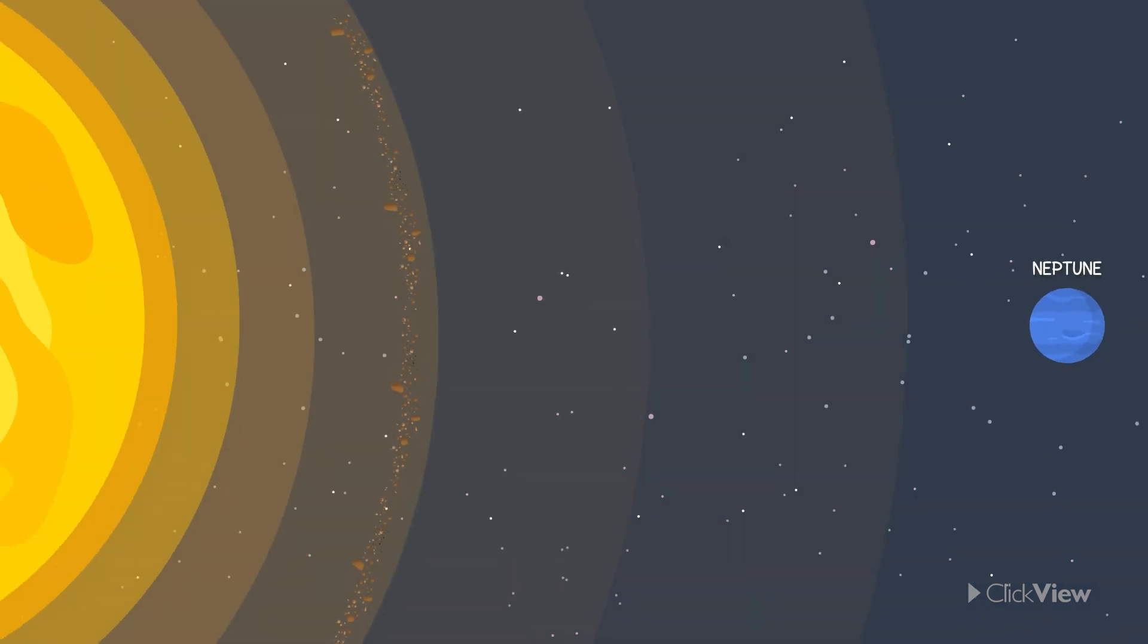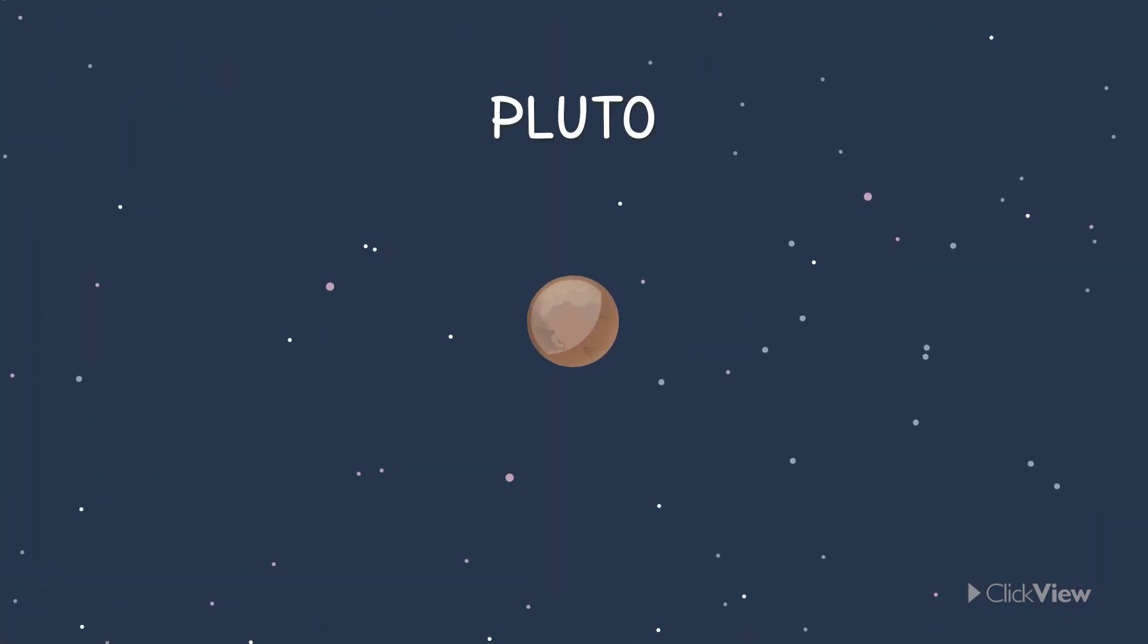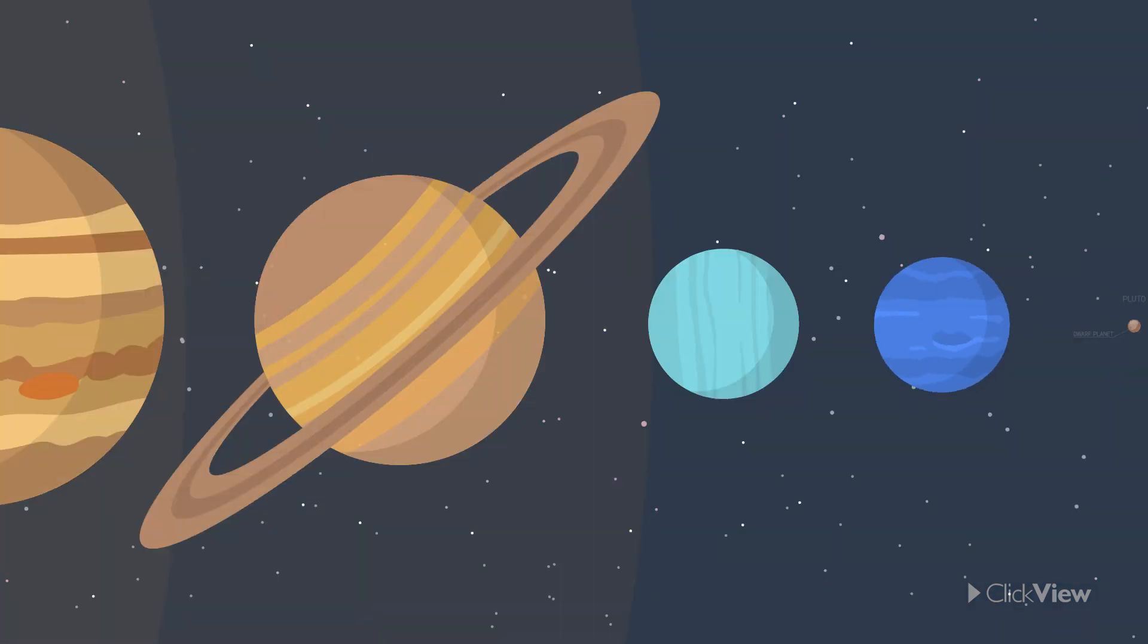The eighth and last planet in our solar system is Neptune. Because Neptune is so far from the Sun, it is one of the coldest places in the entire solar system. You may have heard about Pluto. Pluto is called a dwarf planet because of its much smaller size.